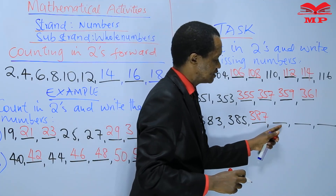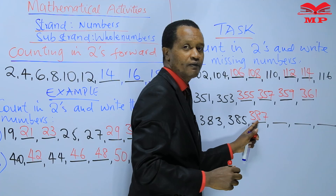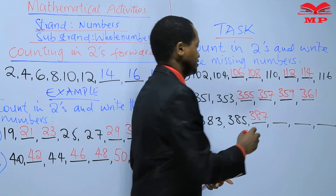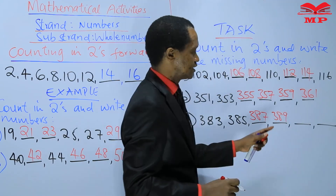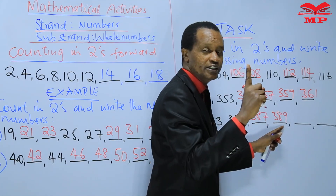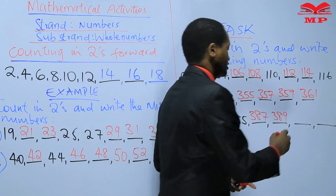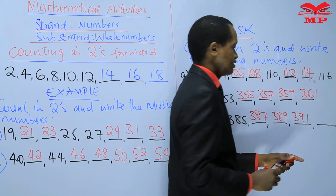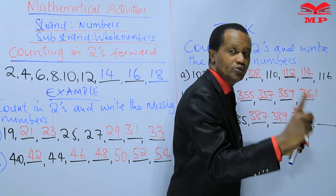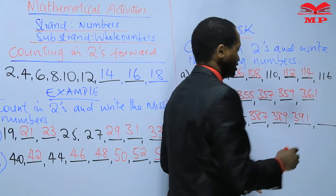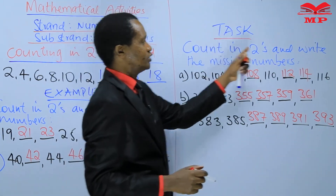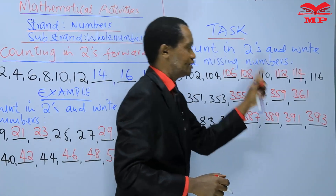From 387, the next missing number: 387, 388, 389 — so we write 389. After 389, counting in twos: 389, 390, 391 — we write 391. Then lastly, after 391 counting in twos: 391, 392, 393 — the last number is 393. We have counted in twos and written all the missing numbers.